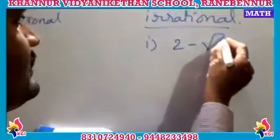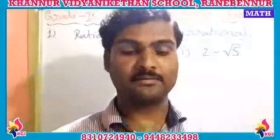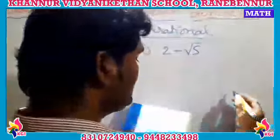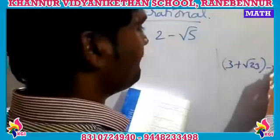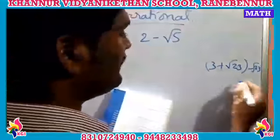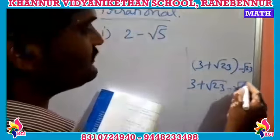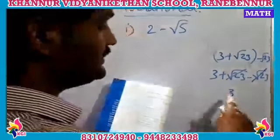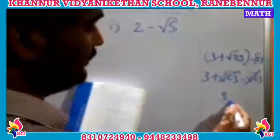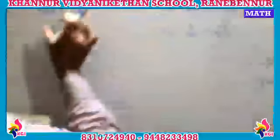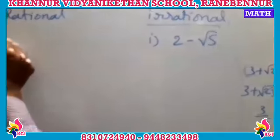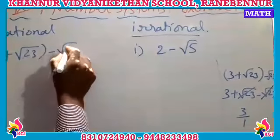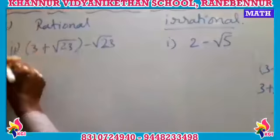The next one is (3 + √23) minus √23. In the working column: 3 + √23 − √23. Removing the bracket, the +√23 and −√23 cancel each other out, leaving just 3. Since 3 is a rational number — it can be written as p/q form with denominator 1 — this goes in the rational column.